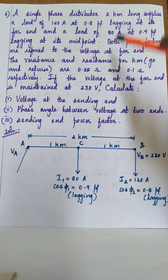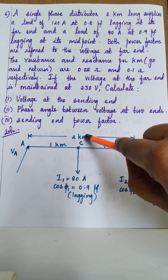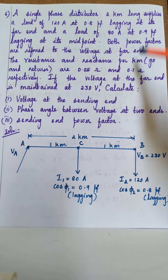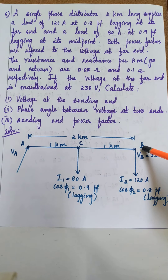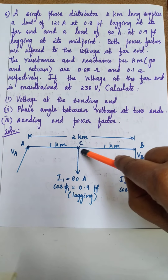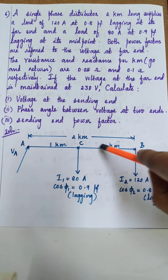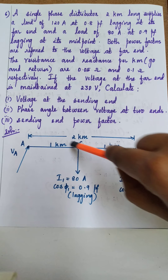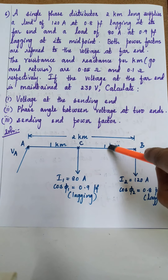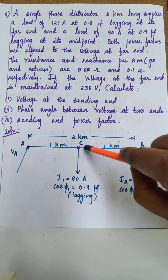Let us draw the given distributor AB which is 2 km long. There are two load tapping points: one is at the far end which is the receiving end B, and the other load tapping point is the midpoint, taken as point C. There are two sections in the distributor — section AC which is 1 km and section CB which is 1 km, because the load at C is at exactly the midpoint.